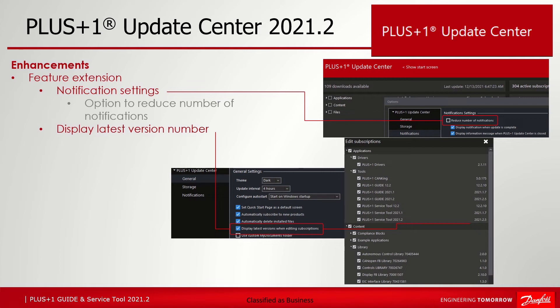Remaining notifications that are still shown are from periodic automatic refreshes when there are updates available for subscribed products. If the option is not checked, then all notifications shown in previous versions are still displayed. In addition, the user can check or uncheck two notification types: 'Display notification when update is complete' and 'Display information message when the Update Center is closed.'